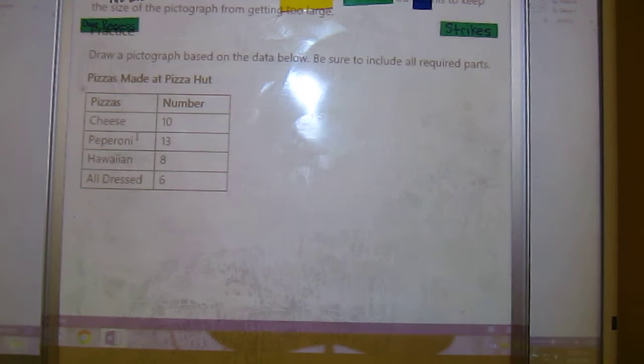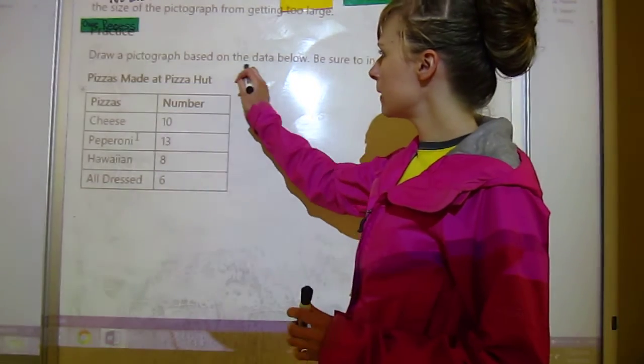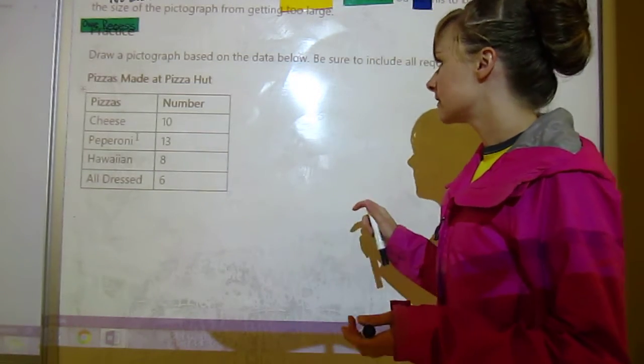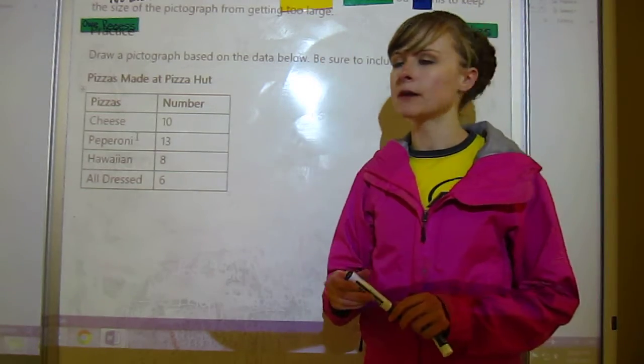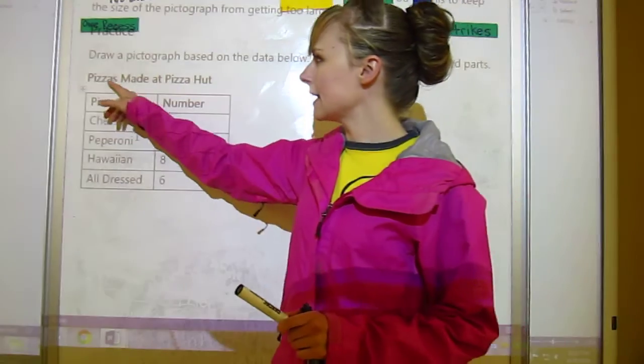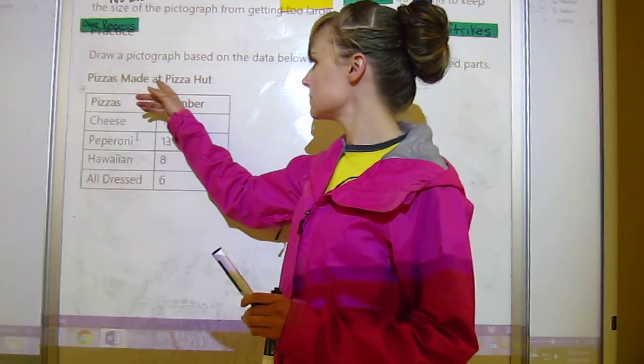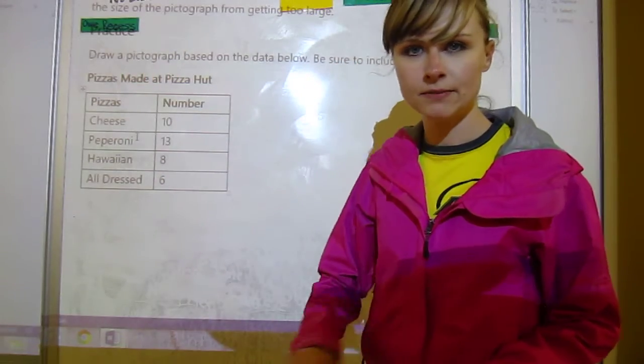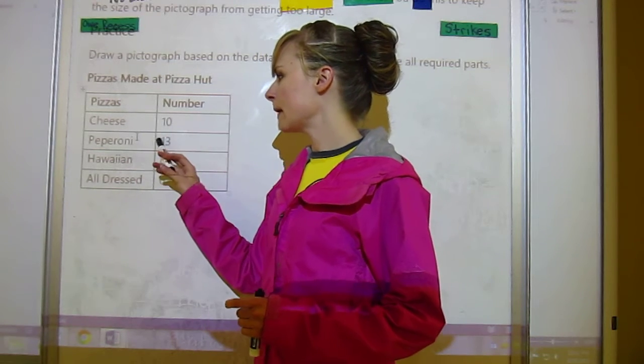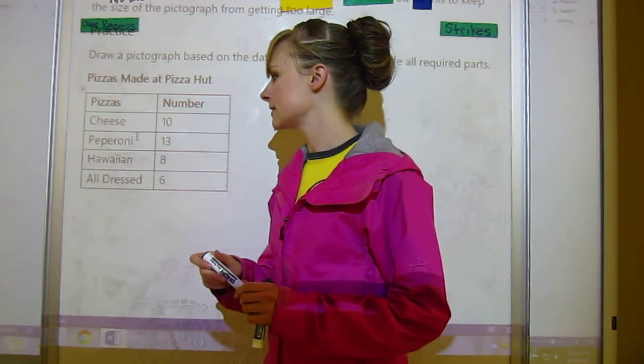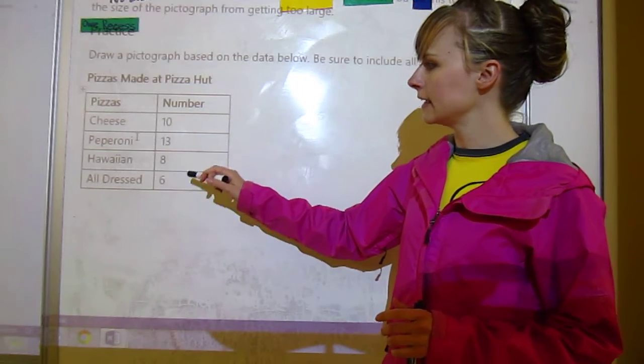It wants us to draw a pictograph based on the data below. Be sure to include all required parts. It says pizzas made at Pizza Hut - I just made this up, there's nothing real. We've got pizzas here and numbers: cheese 10, pepperoni 13, Hawaiian 8, and all dressed 6.